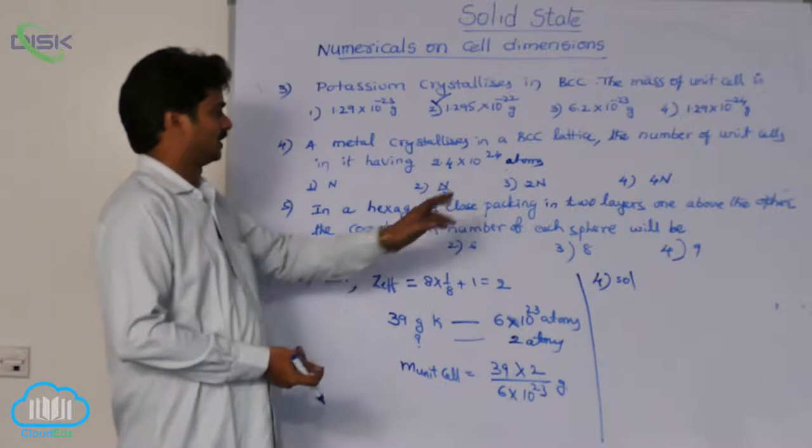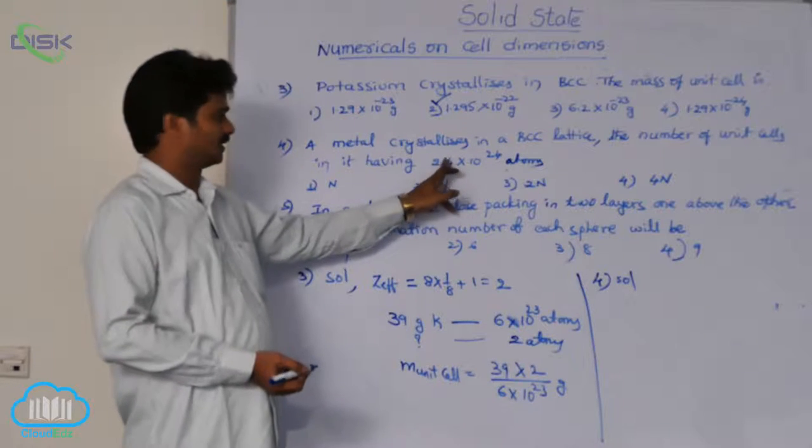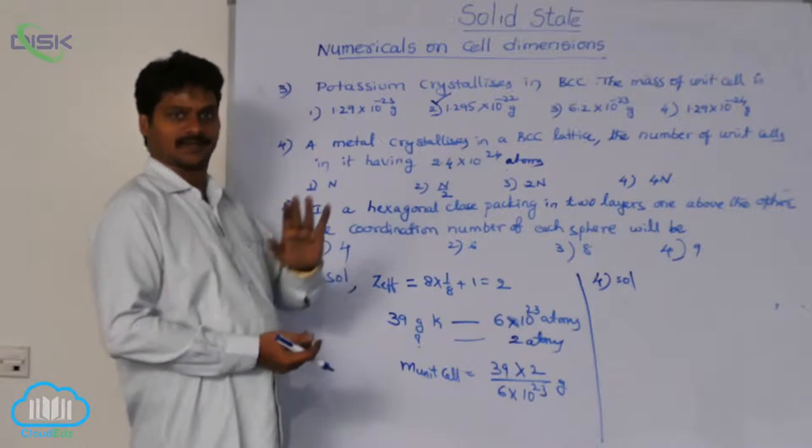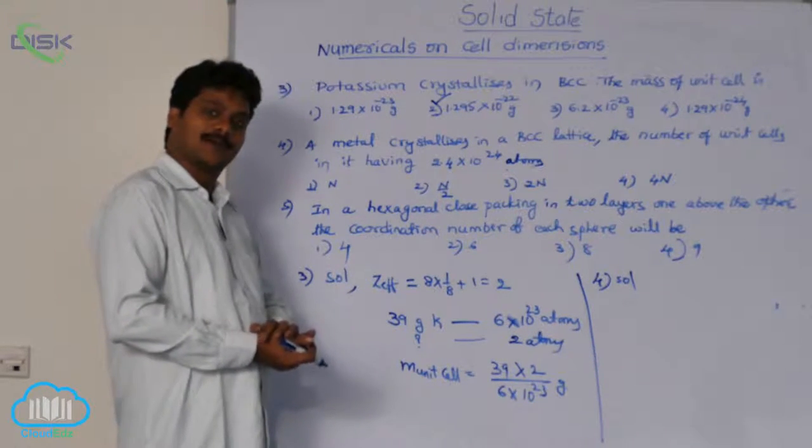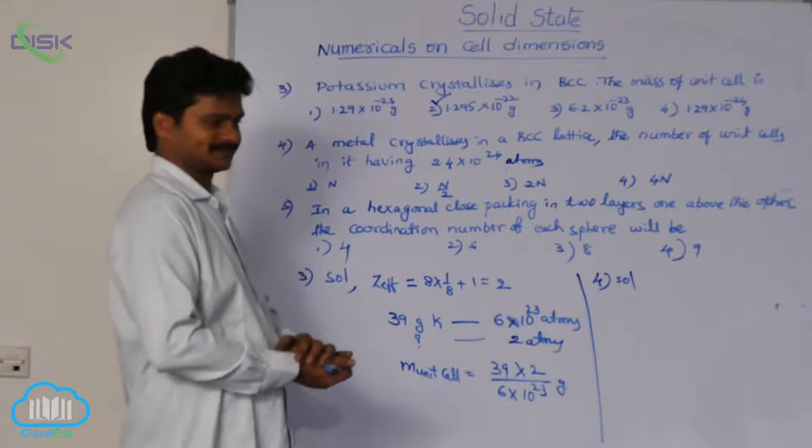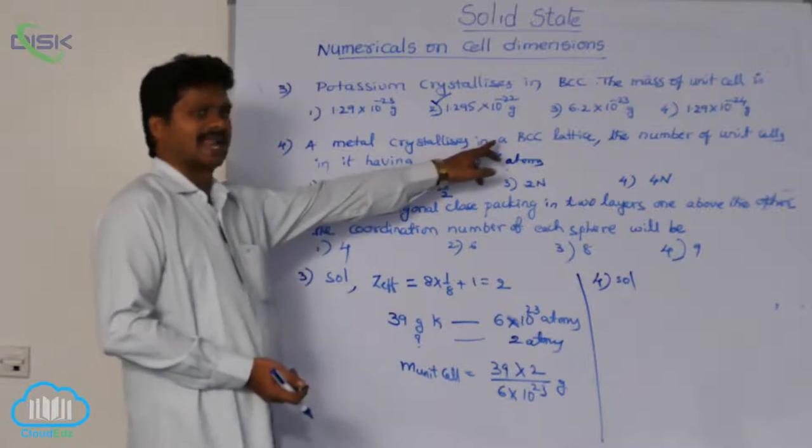So here the number of atoms 2.4 into 10 power 24 given. From that we have to find out the number of unit cells. Here also the lattice is BCC.